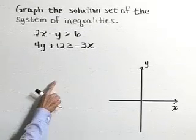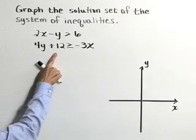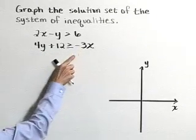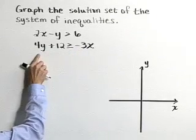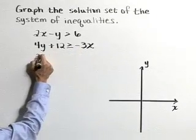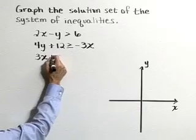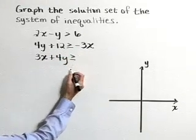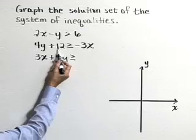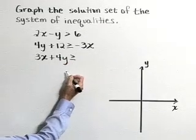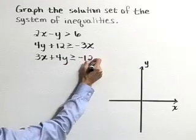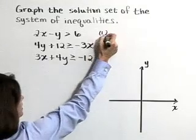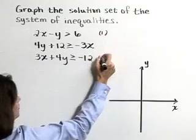I'm going to start by rearranging the second inequality and getting the x's and y's on the same side. Adding 3x to both sides gives 3x plus 4y is greater than or equal to, then subtracting 12 from both sides makes that negative 12. So we've got our two inequalities, numbers 1 and 2.